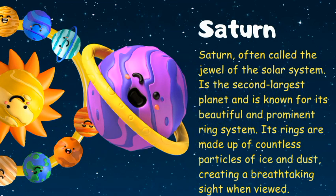Saturn, often called the jewel of the solar system, is the second largest planet and is known for its beautiful and prominent ring system. Its rings are made up of countless particles of ice and dust, creating a breathtaking sight when viewed.